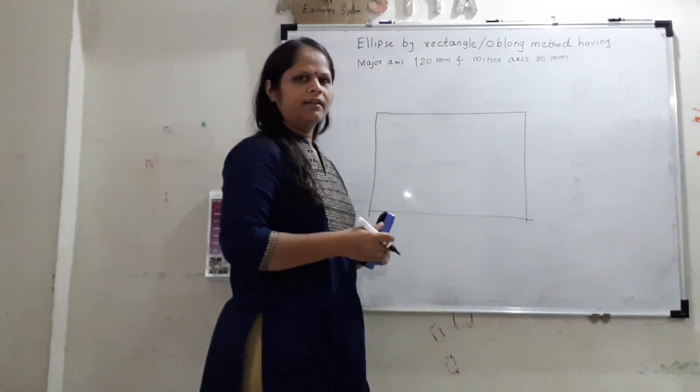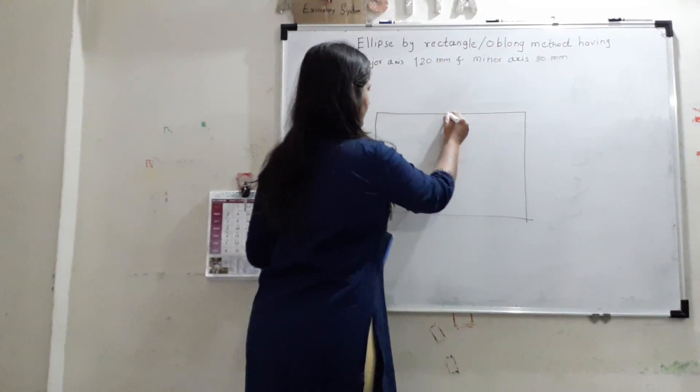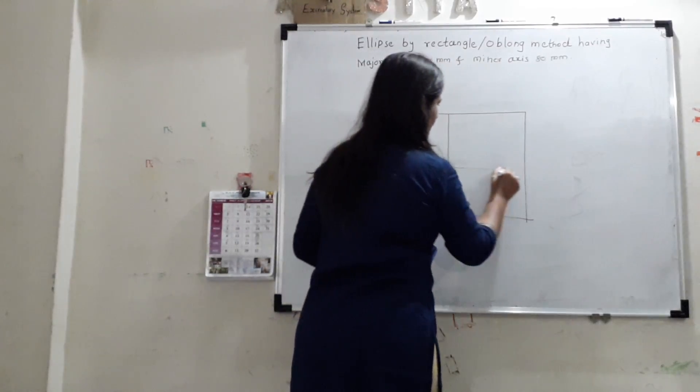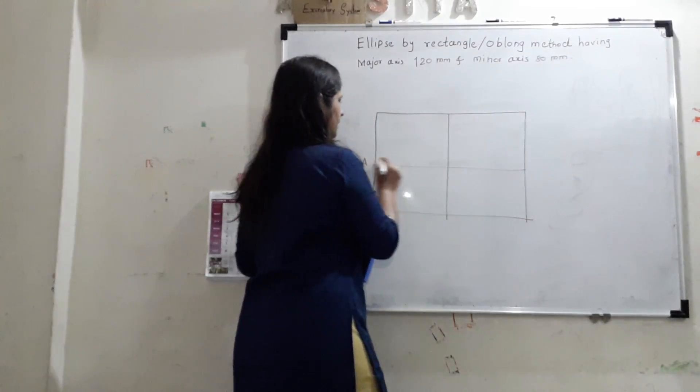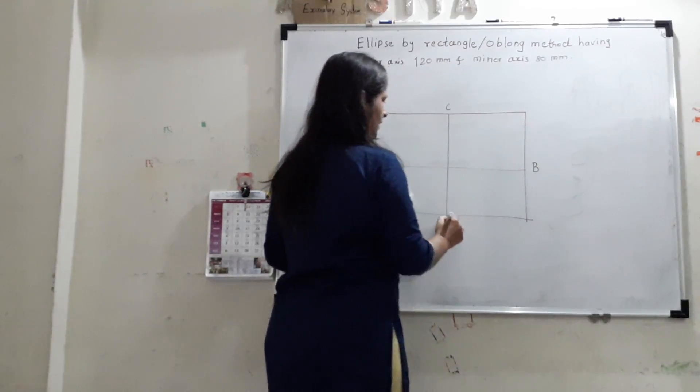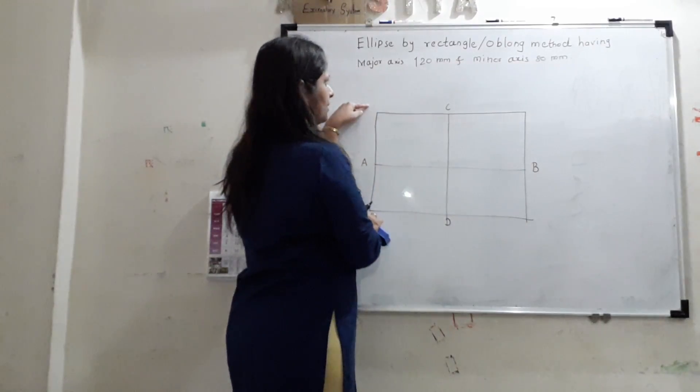Once we create a rectangle, we will divide the rectangle in four equal parts. Once we divide the rectangle, we will give names to the point. A to B is the major axis and C to D is the minor axis. This dimension is 100 mm, this dimension is 80 mm.